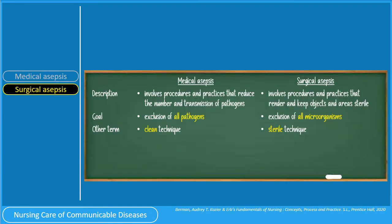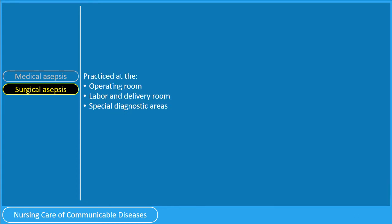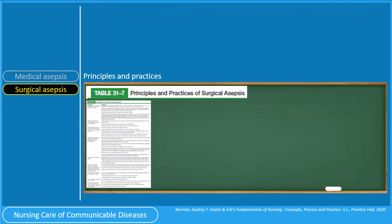Surgical asepsis involves procedures and practices that render and keep objects and areas sterile. The goal of surgical asepsis is the exclusion of all microorganisms, and it is otherwise known as the sterile technique. Sterile technique, or surgical asepsis, is practiced in operating rooms, labor and delivery rooms, or special diagnostic areas. The principles and practices of surgical asepsis are best discussed under perioperative nursing, and there is a comprehensive table in Kozier which summarizes them.